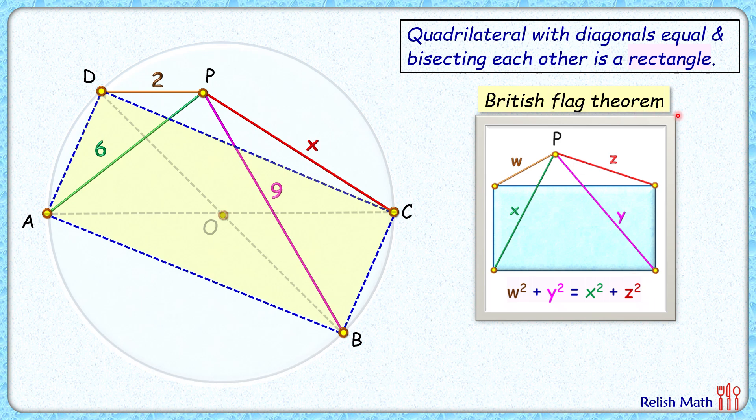So applying this theorem, we'll get 2 squared plus 9 squared equals 6 squared plus x squared. Solving it, we'll get x squared as 49, and x as 7 centimeters. And that's our answer.